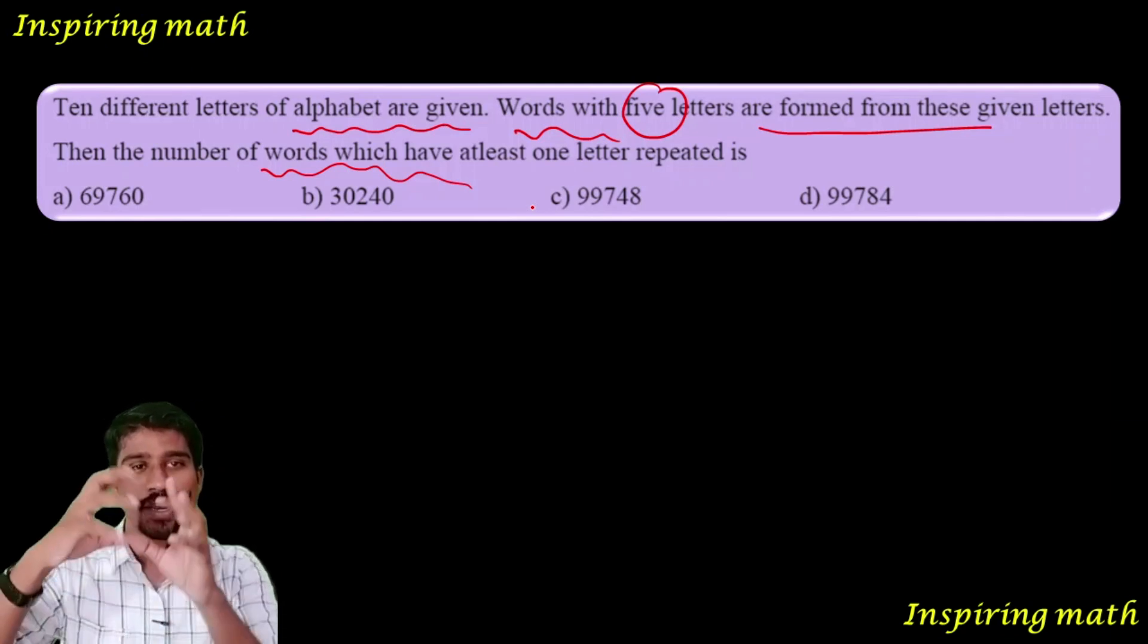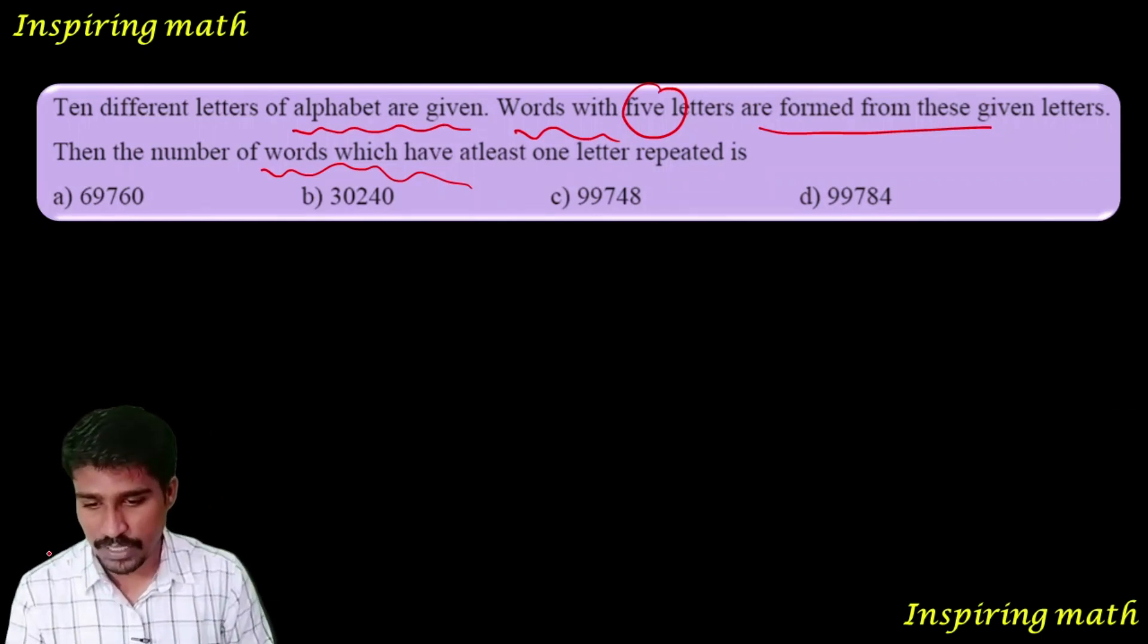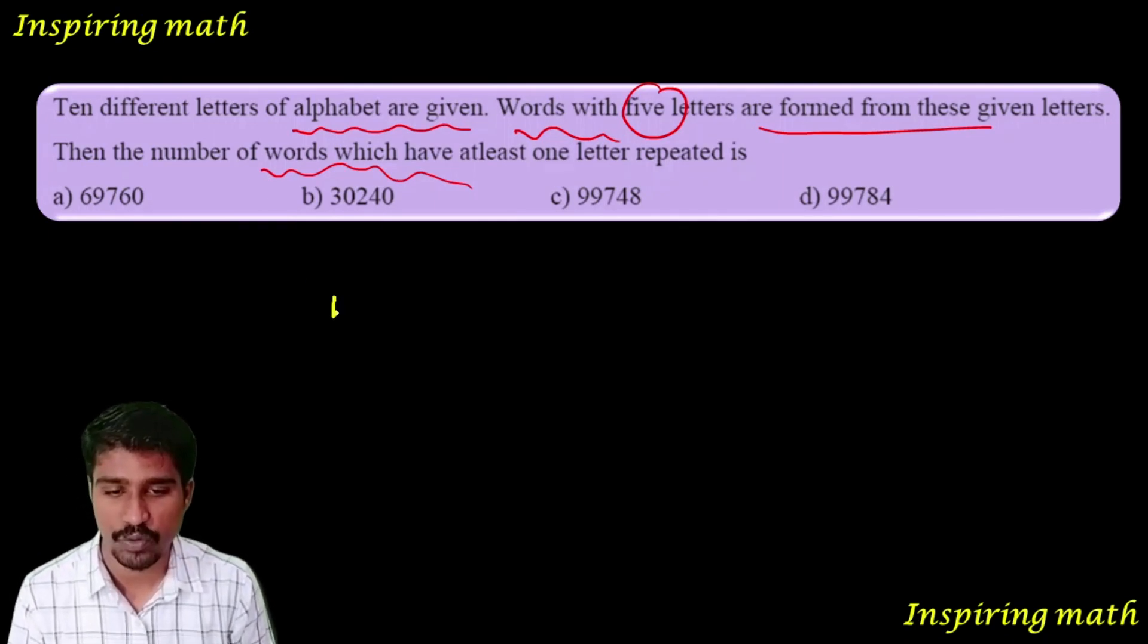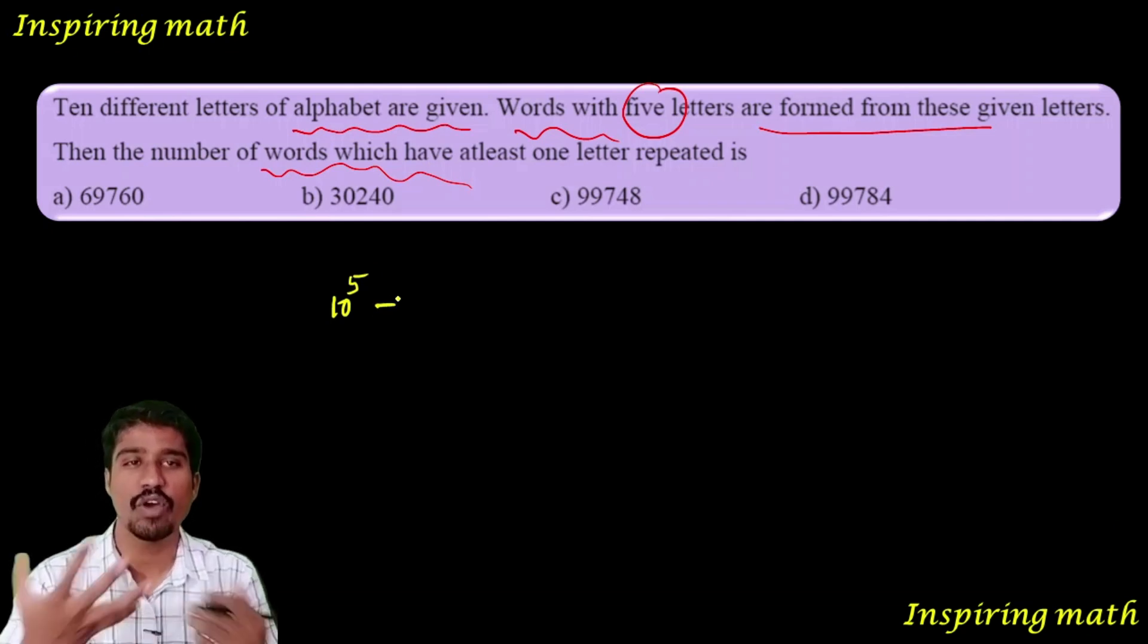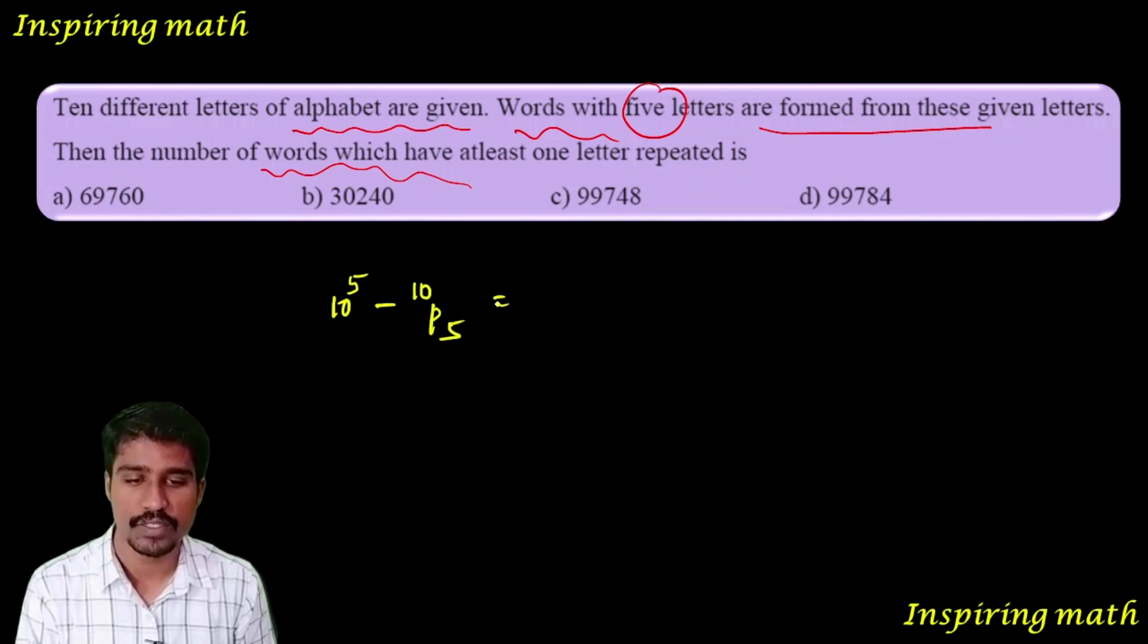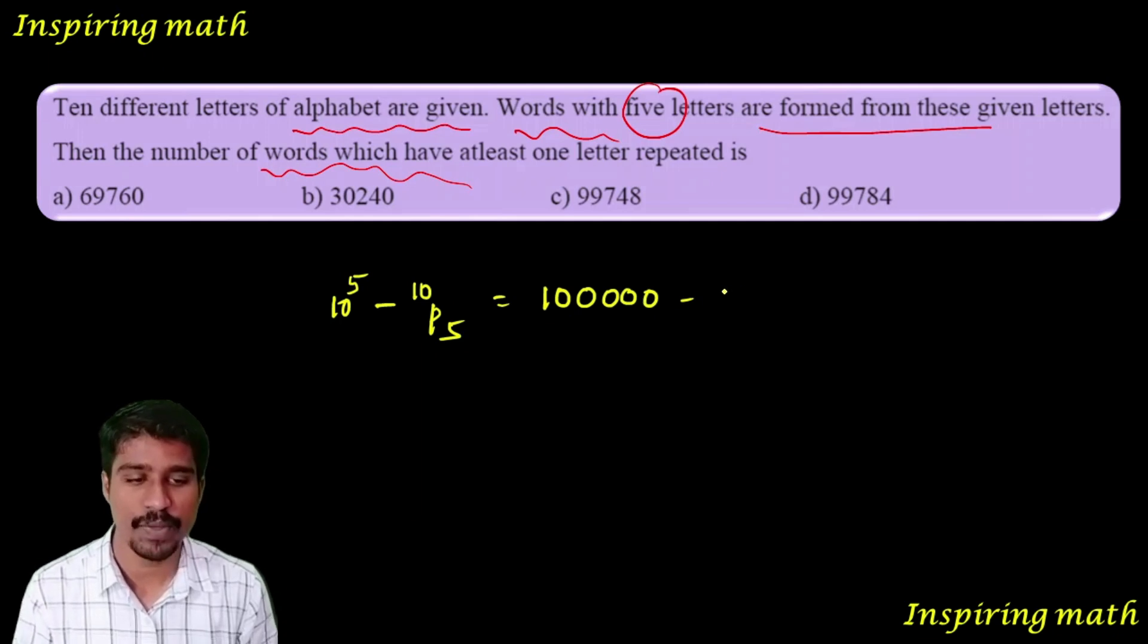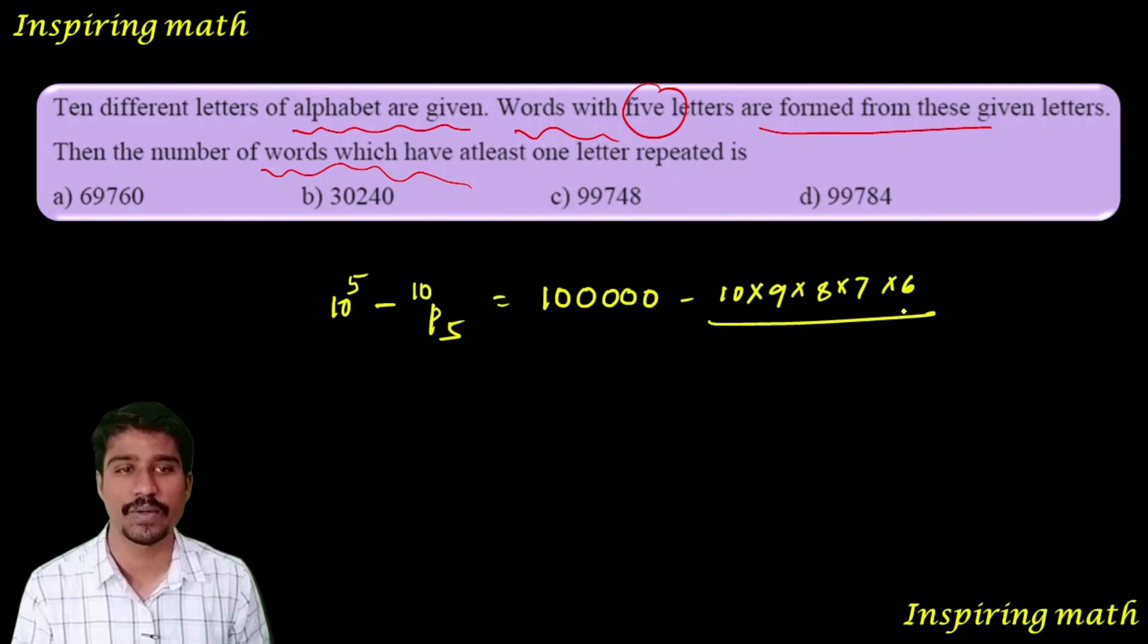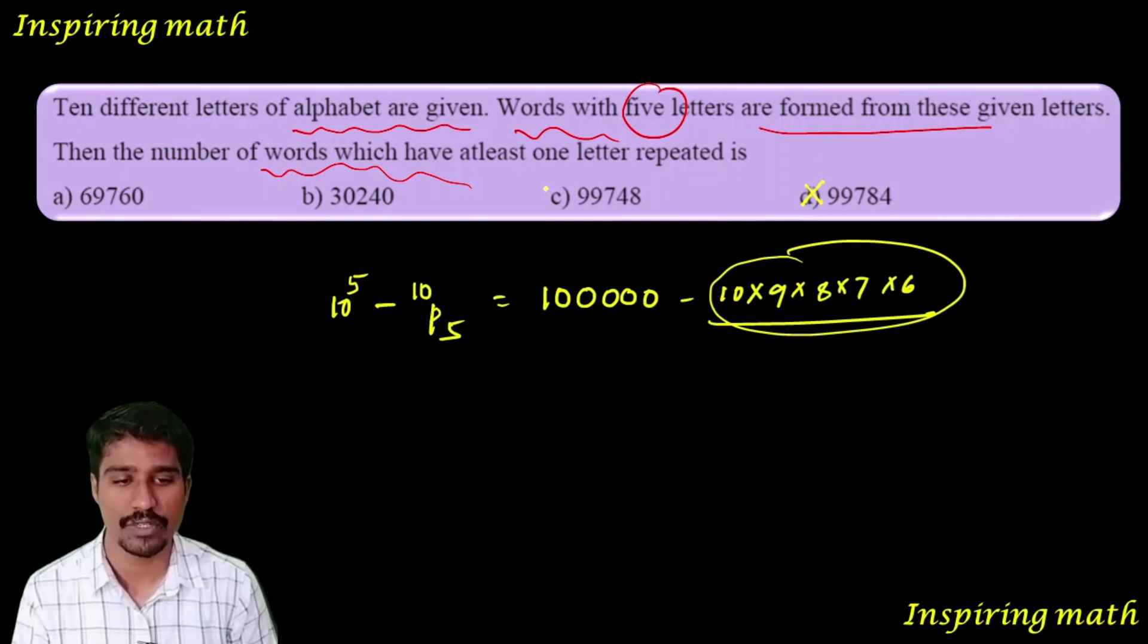First one is total number of words with repetition minus without repetition. 10 power 5 can be written as one lakh minus 10P5, which is 10 into 9 into 8 into 7 into 6.